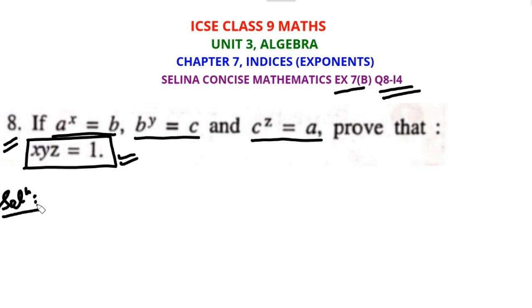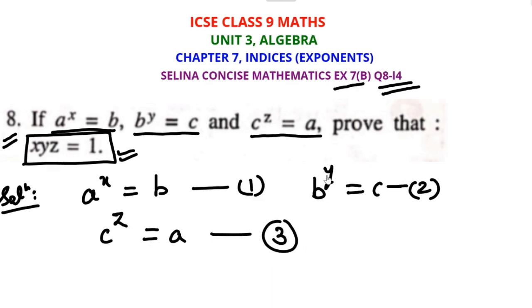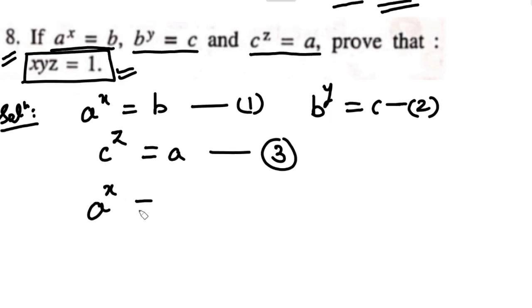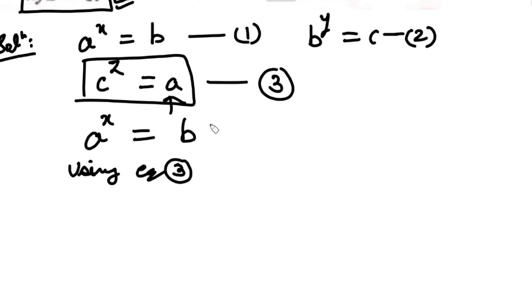We will try to make the base equal. In the three relations, we will combine them together. We can combine the third relation — C raised to the power Z equals A — into relation number 1. Using equation 3, in place of A we can put C raised to the power Z, keeping the power X as it is.